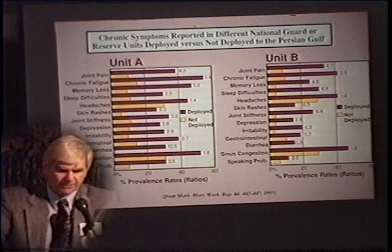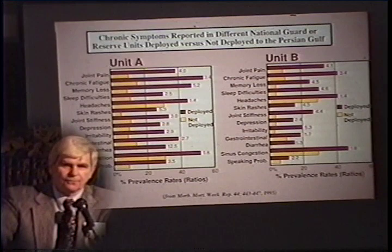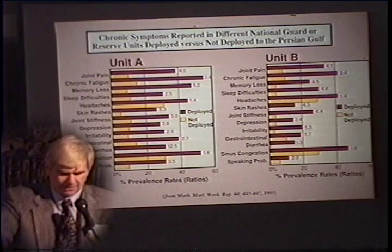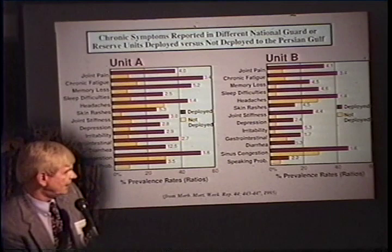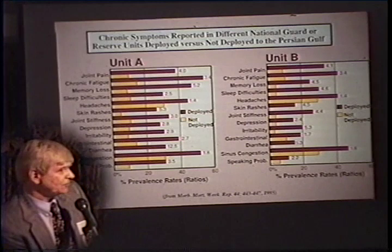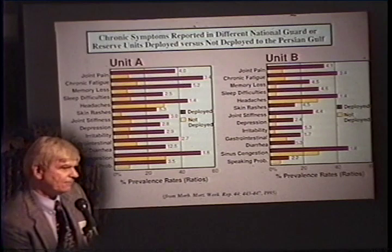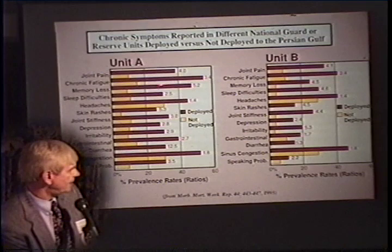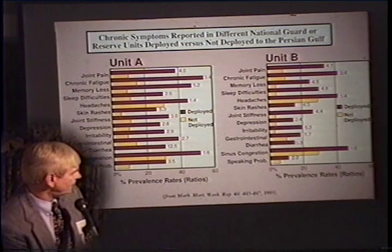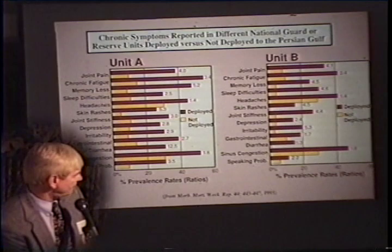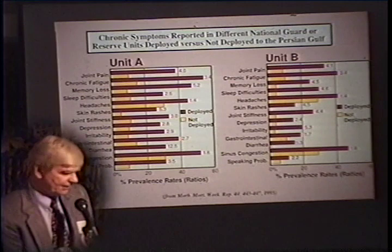For years the Department of Defense and the Ministry of Defense in Great Britain refused to consider that deployment to the Persian Gulf resulted in any higher incidence of illness. But a CDC case-control study on Air Force Reserve and Army Reserve units from central Pennsylvania compared units where half the members were deployed to the Persian Gulf and half remained behind. If you were deployed — shown in red — you had a much higher incidence of all these chronic signs and symptoms: joint pain, chronic fatigue, memory loss, sleep difficulties, headaches, skin rashes, depression, gastrointestinal problems, and diarrhea.